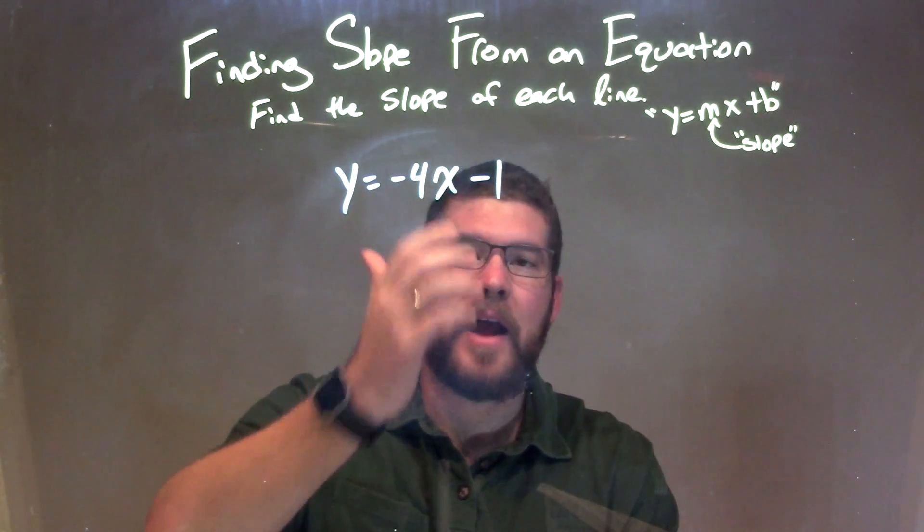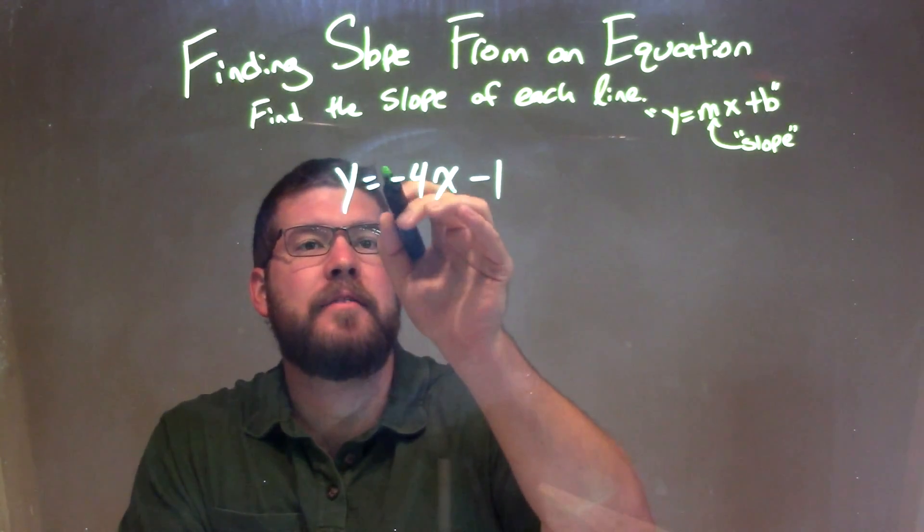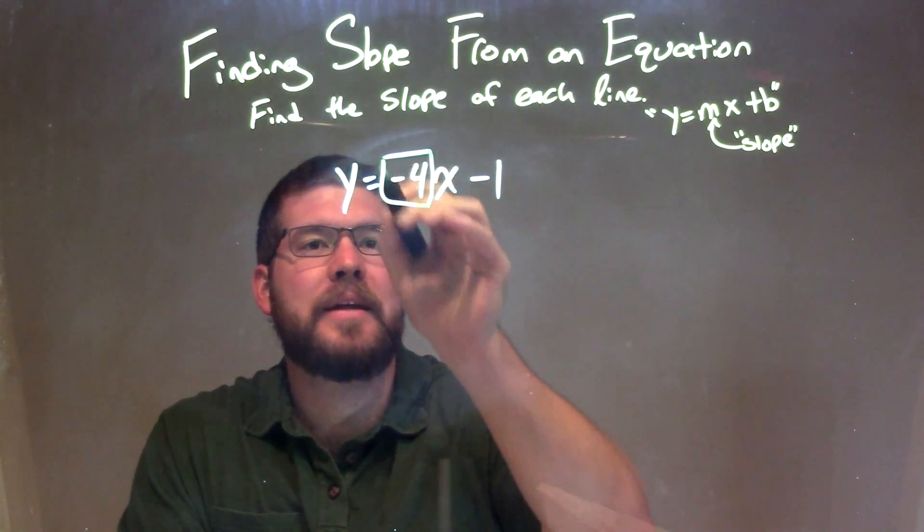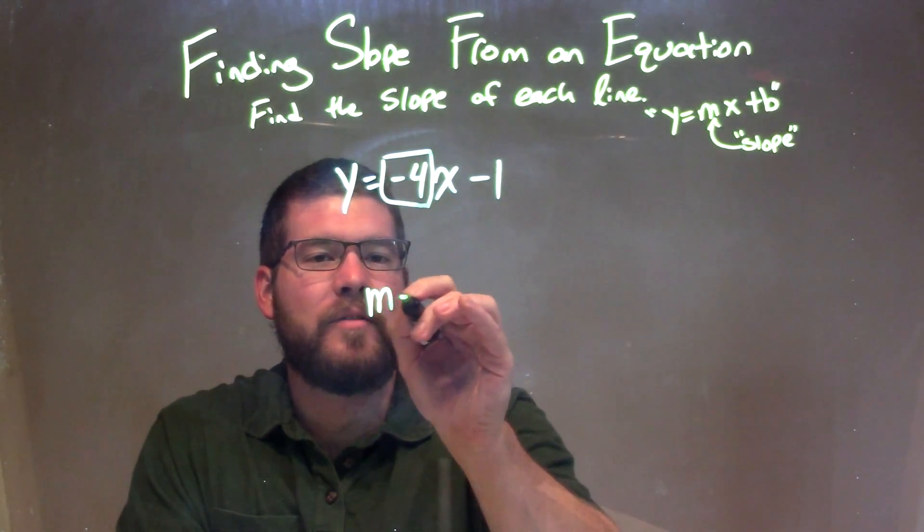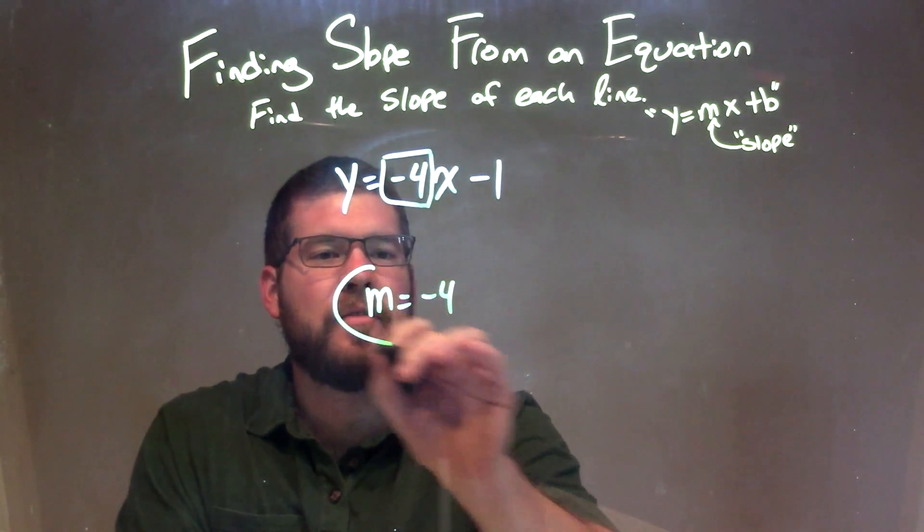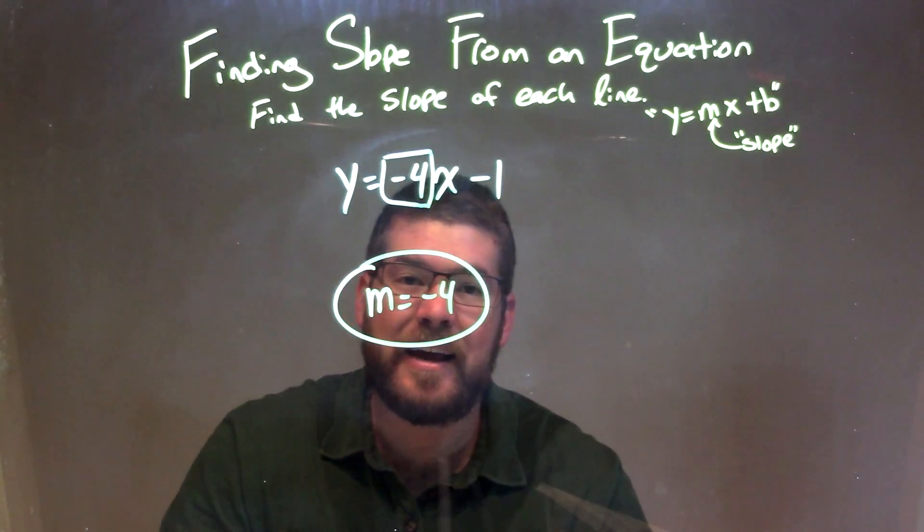So now we need to find our m value, which is our slope. Well, negative 4, right there, we can see is the coefficient in front of x, and so that is our slope value. So we have m equals negative 4, and so our slope is just negative 4.